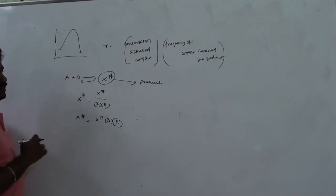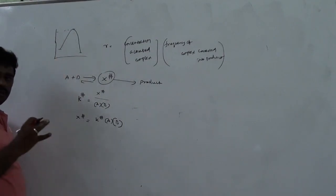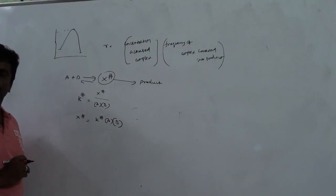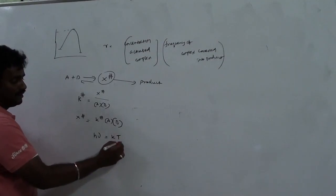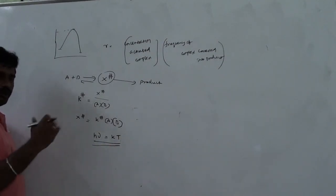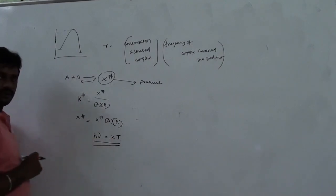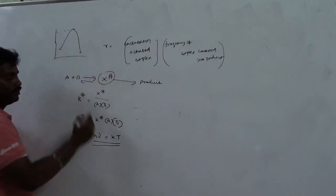Now, the frequency at which the complex is converted into product: whenever the activated weak bonds are present in the transition state, new bonds form and old bonds break. What is happening? The vibrational energy is converted into translational energy. So hν can be equated with kT — the Boltzmann constant times temperature. This is the vibrational frequency — the bond break frequency.